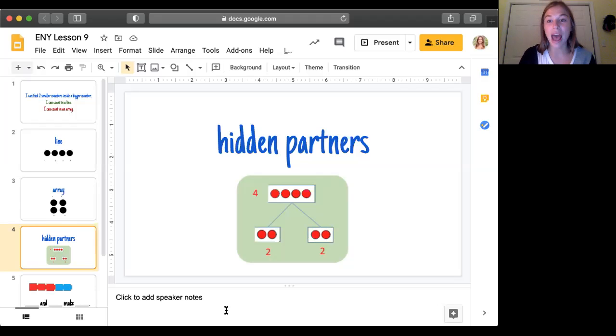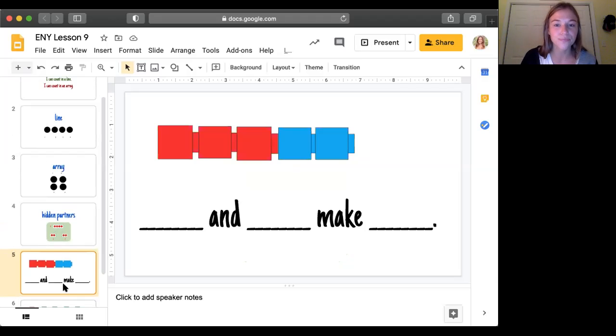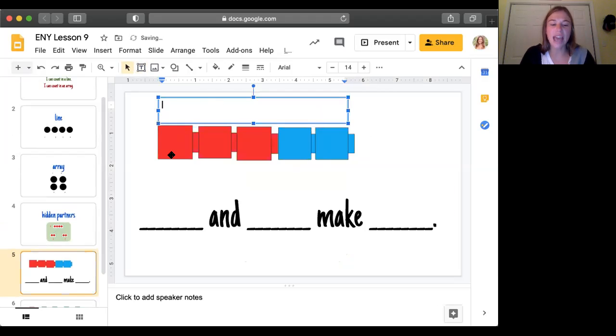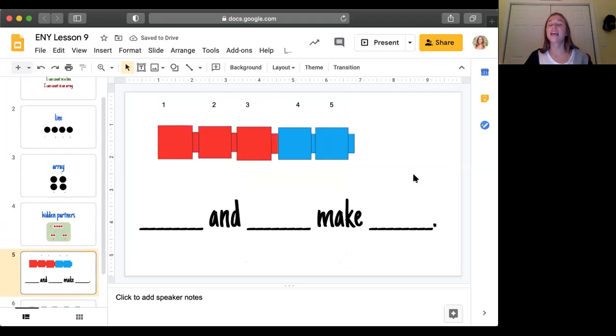All right, so now get ready scholars because we are going to find some hidden partners together. All right, so here Miss Weed has a cube tower. She's going to count how many cubes are there: one, two, three, four, five. So Miss Weed has a tower of five cubes.